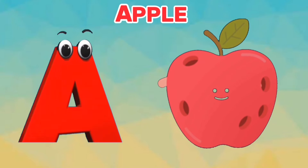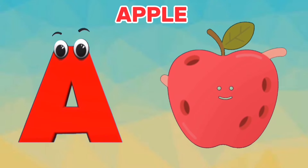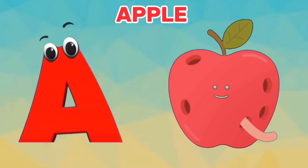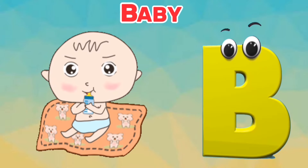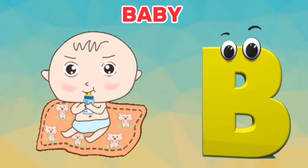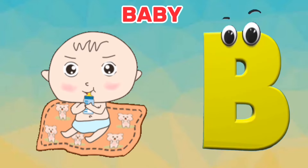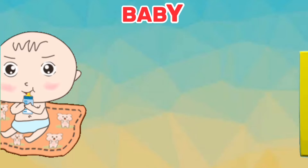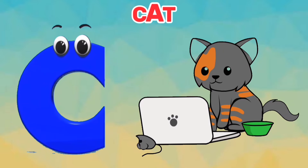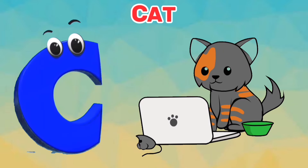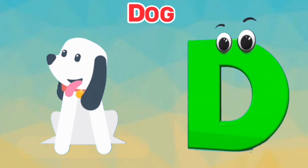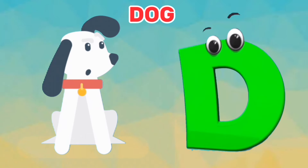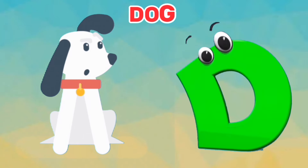A is for apple. A, a, apple. B is for baby. B, b, baby. C is for cat. C, c, cat. D is for dog. D, d, dog.